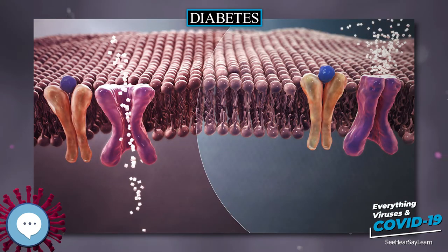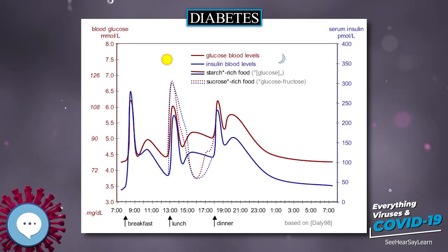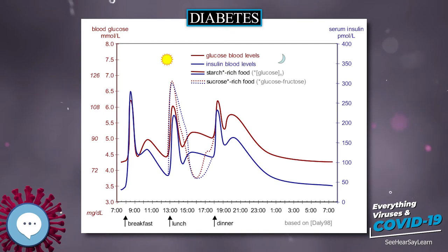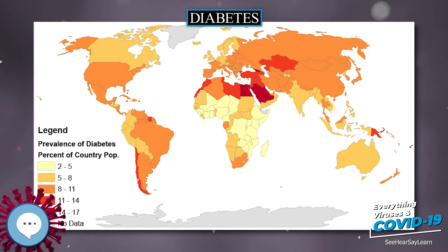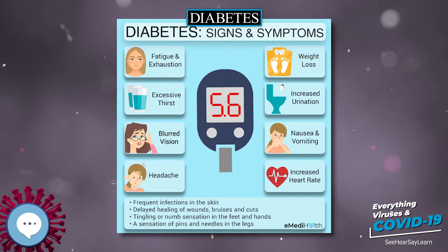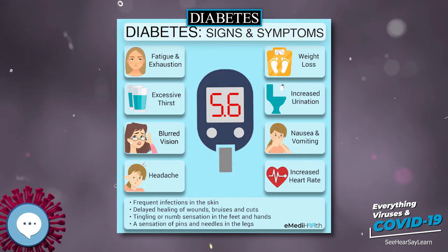Symptoms often include frequent urination, increased thirst, and increased hunger. If left untreated, diabetes can cause many complications. Acute complications can include diabetic ketoacidosis, hyperosmolar hyperglycemic state, or death.